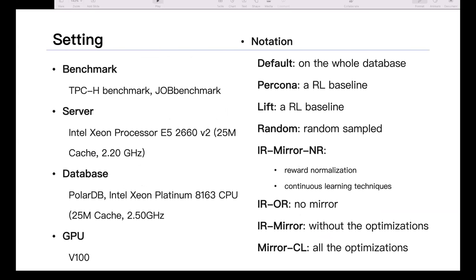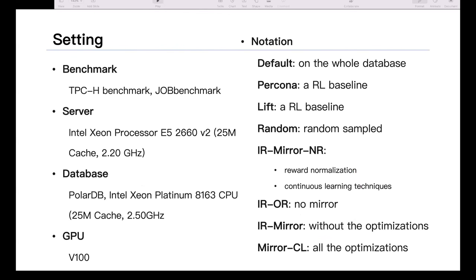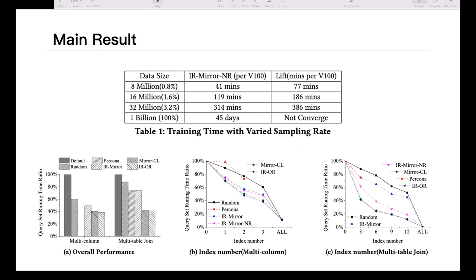The last piece is the experiment. We want to compare Mirror with previous work as well as our own baseline, which is a randomized index baseline. Persona and Lift are two reinforcement learning powered baselines published previously. On the table on the upper side, on a 1 billion database, Mirror takes 45 days to converge per V100, but Lift, the previous work, couldn't achieve convergence. We also compare with Persona on the bottom right hand side. There are more experiments in our paper that I chose not to put in the slides.